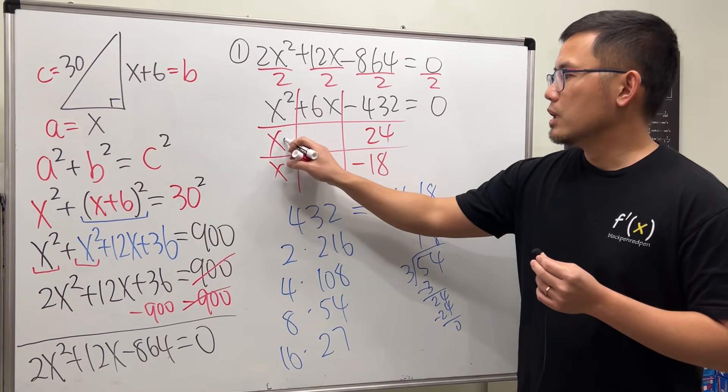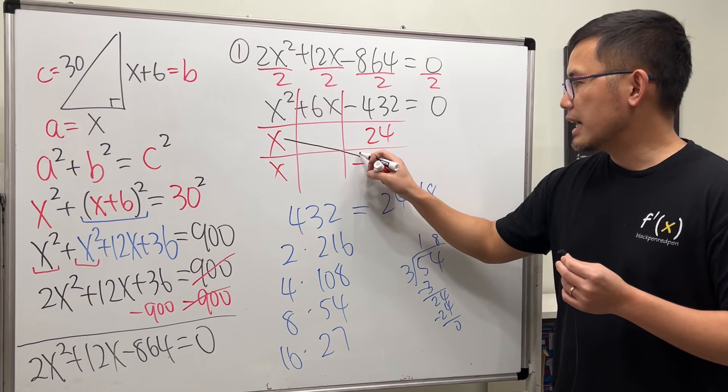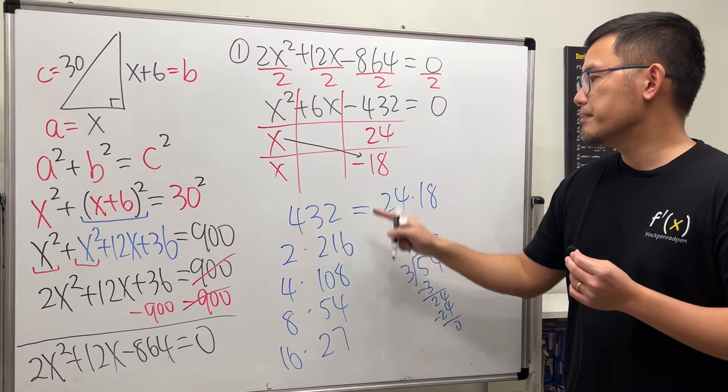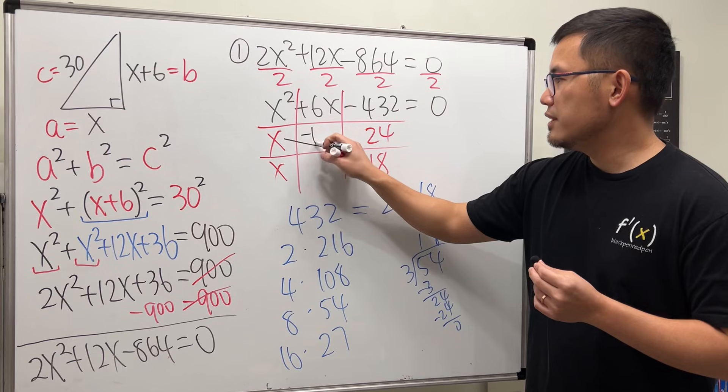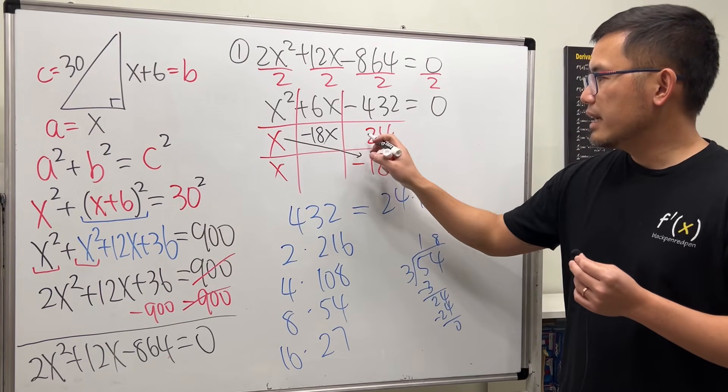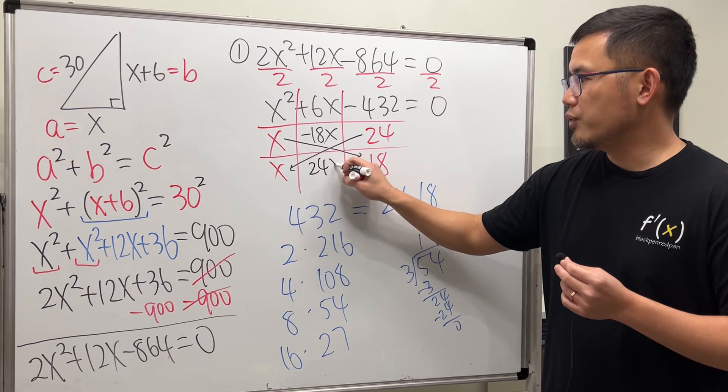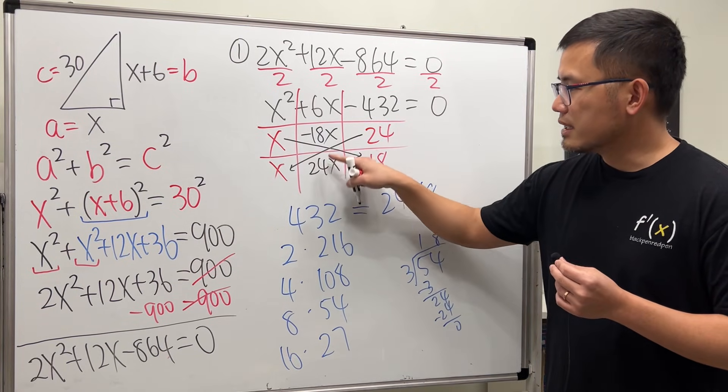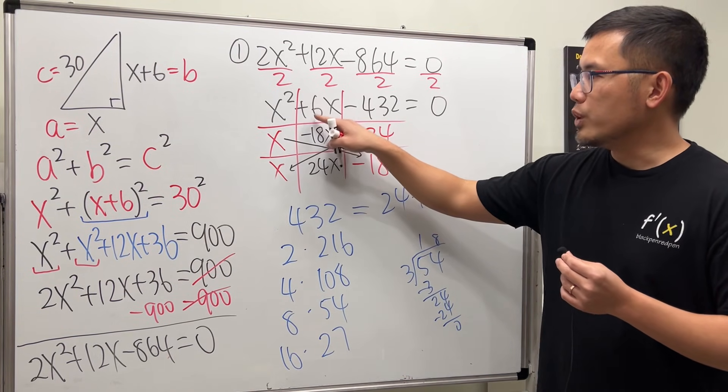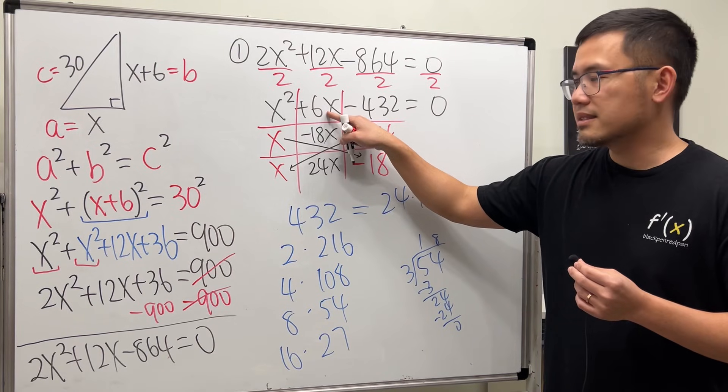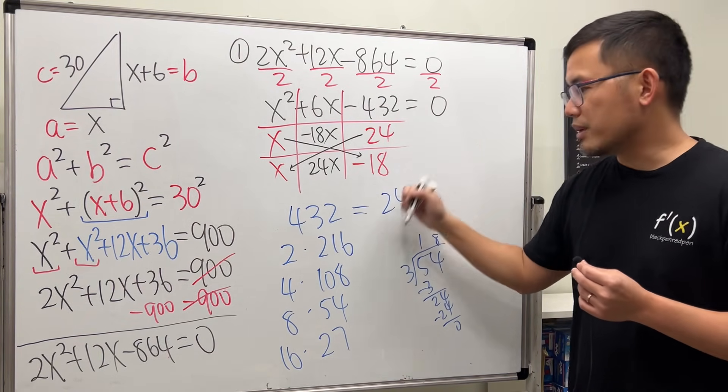We are going to make the 18 negative. Because, once you take this times that. This is how we check the answer. -18 times x is -18x. And then, take 24 times x. We get positive 24x. Together, you see the middle term. We do end up with the positive 6x. So, this is why we put the -18 right here.